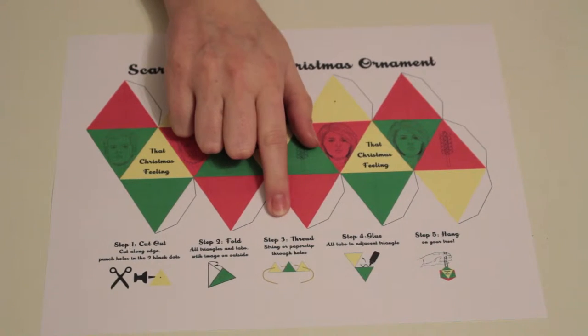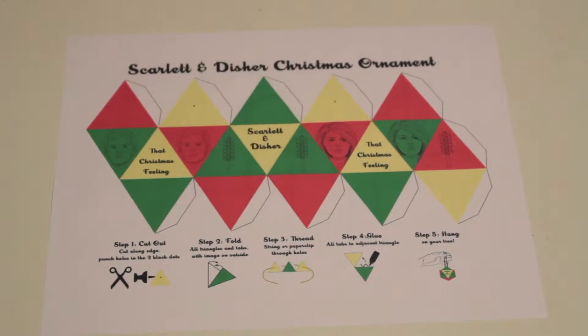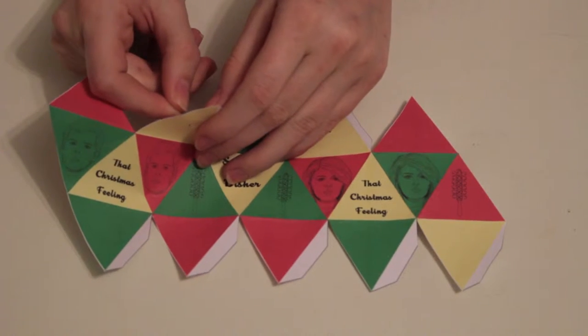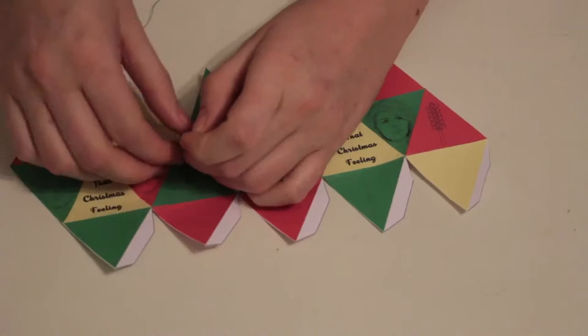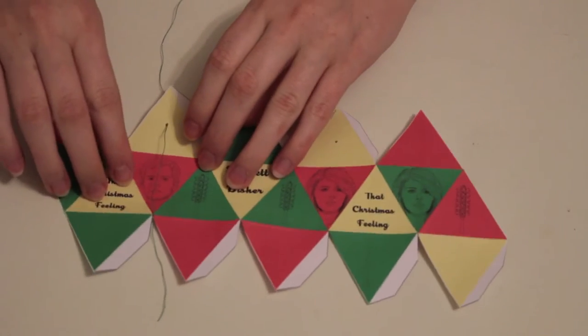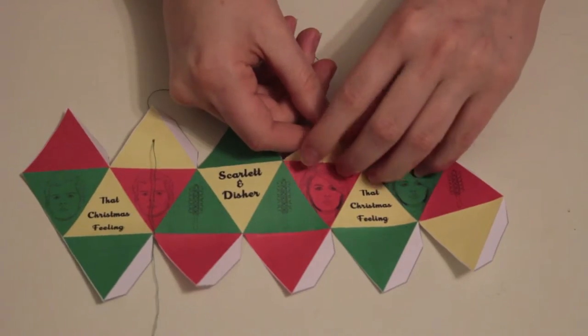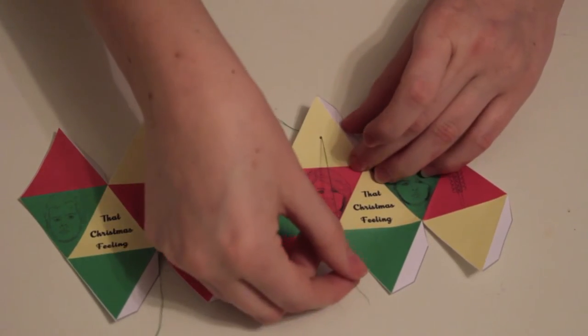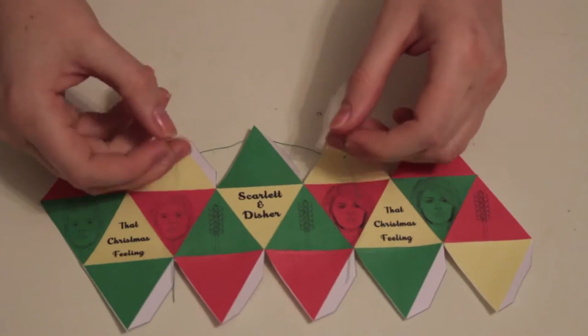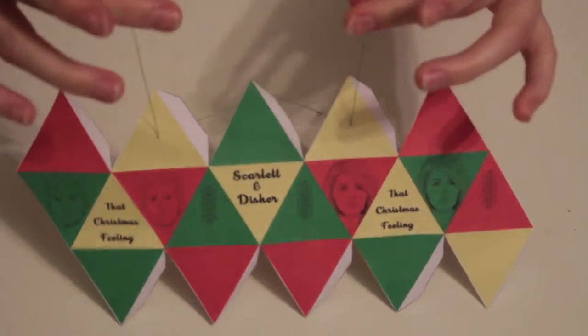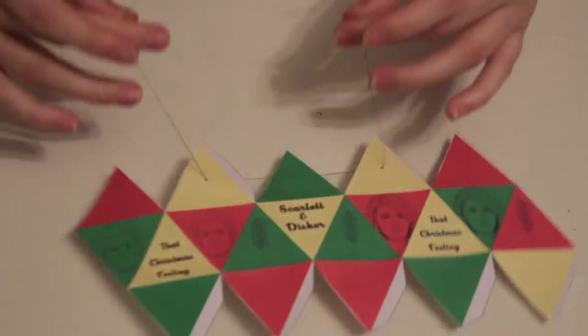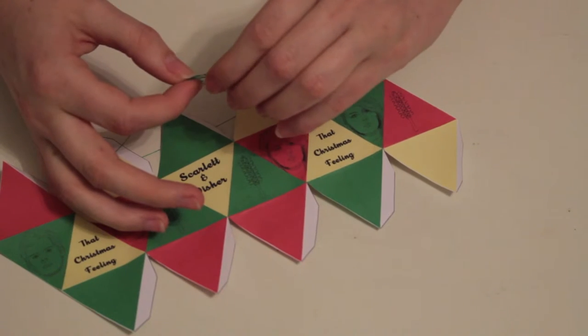Step 3: Thread. Thread each end of your string through the two holes, and tie them together to form a loop.